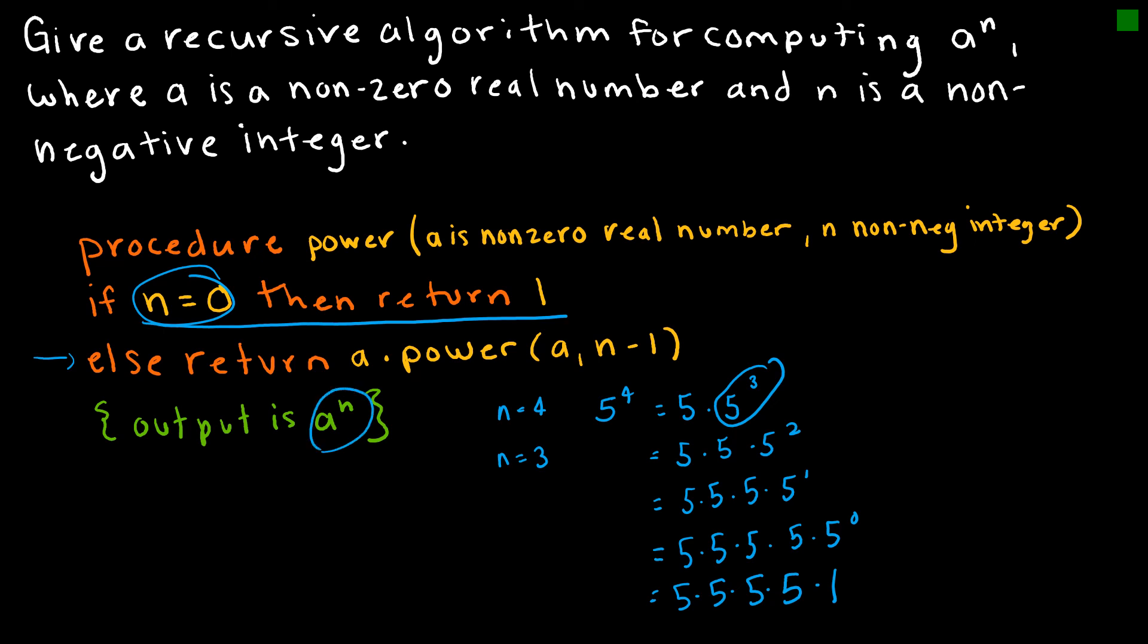And the output is a to the n, and in this case, notice, it is 5 to the 4th.